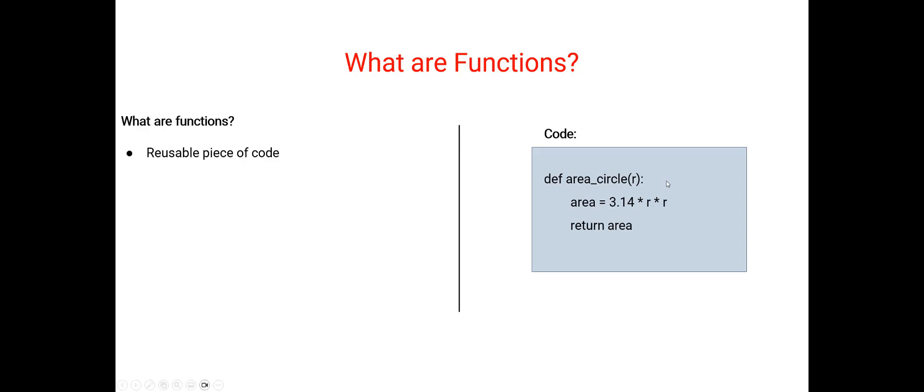Anytime we call this area_circle in a program with any value of r, we'll get the area. So we have to only write this code once, and we can execute it multiple times. The second point about a function is it is usually used to solve a specific problem. In our case, the specific problem was to find the area of a circle.